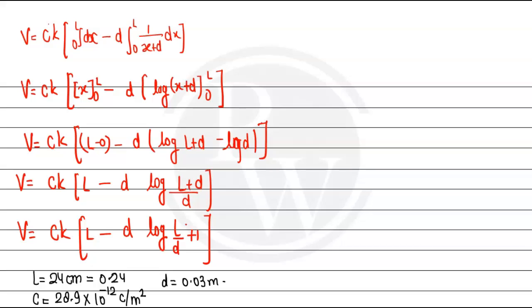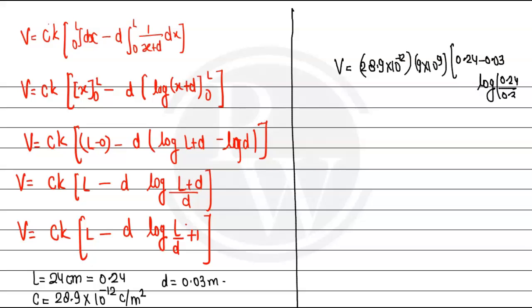These values, if we put them here, we get the value. The voltage function is like this: V is going to be C, that is 28.9 times 10 to the power minus 12, K's value is 9 times 10 to the power 9, and in brackets, L's value is 0.24 minus D's value is 0.03, and this is going to be log of L upon D, so 0.24 divided by 0.03 plus 1. When you completely solve this, you get the voltage value of 0.001863 volts.